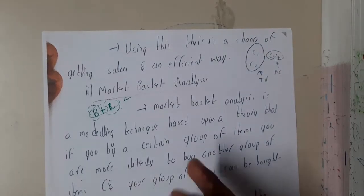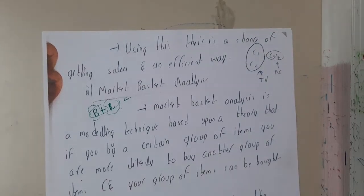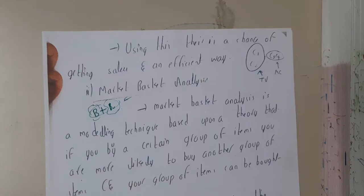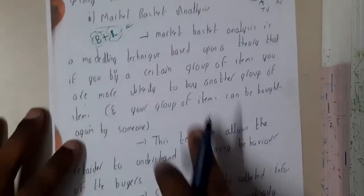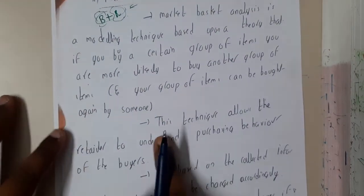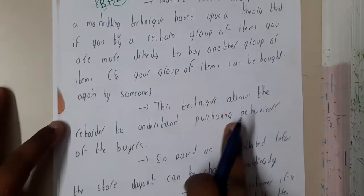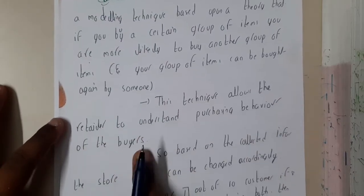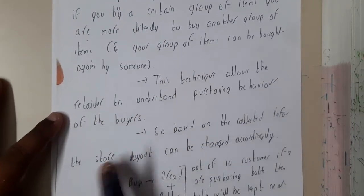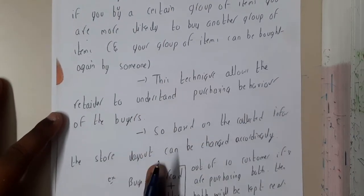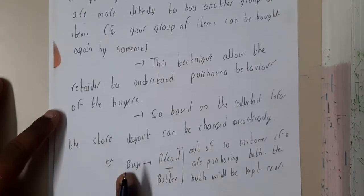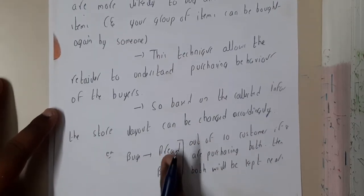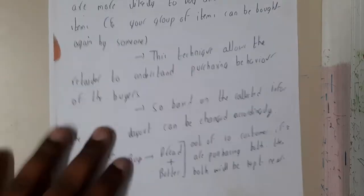The shop owner observed this buying behavior and placed bread and butter nearby. This technique allows retailers to understand the purchase behavior of buyers. Based on the collection of this information, the store layout can be changed accordingly. So that is market basket analysis — buyers buying bread and butter placed together based on observed patterns.